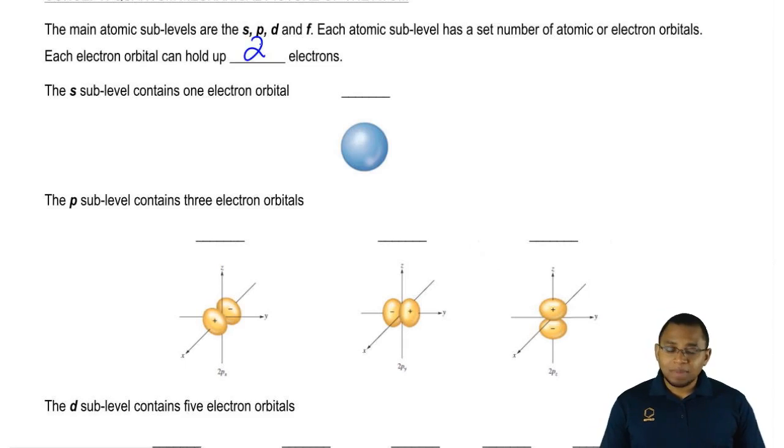If we look at the S sub-level, we say that it has one electron orbital and each electron orbital holds two, so S can hold a maximum of two electrons. Remember the shape of S is also a sphere. And also remember we talked about the magnetic quantum number, M sub-L. It's a way of describing the numerical value for each one of these electron orbitals. The M sub-L value here would be zero.